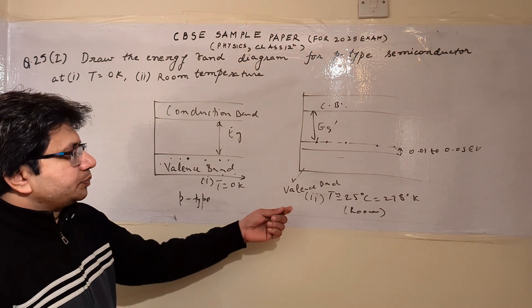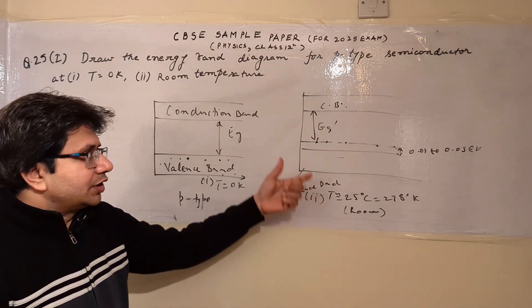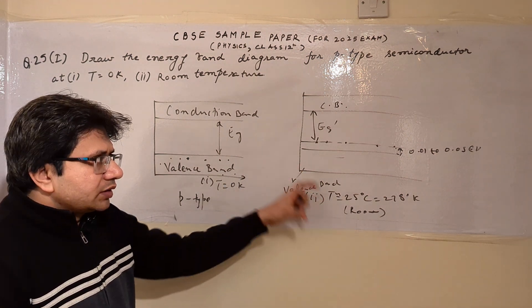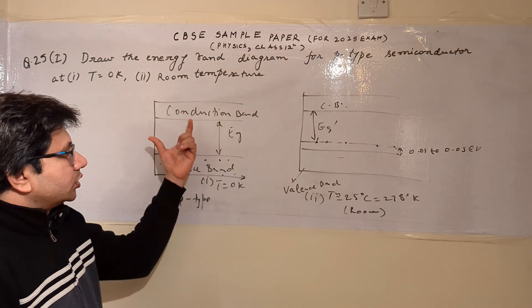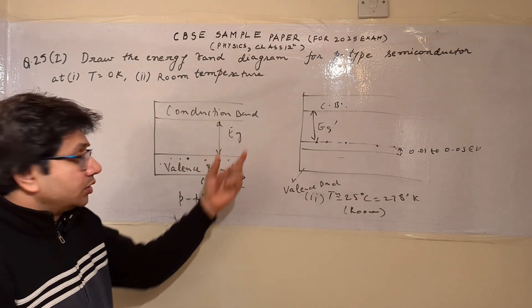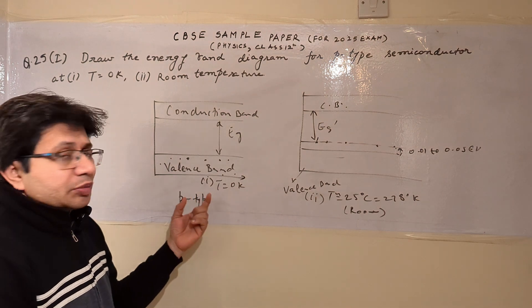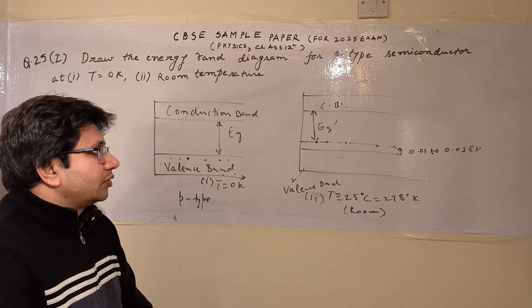So in this way, we can say that the band gap reduces in the case of P-type semiconductor when the semiconductor is at room temperature. And none of the charge carriers are in the conduction band when the P-type semiconductor is at 0 Kelvin.